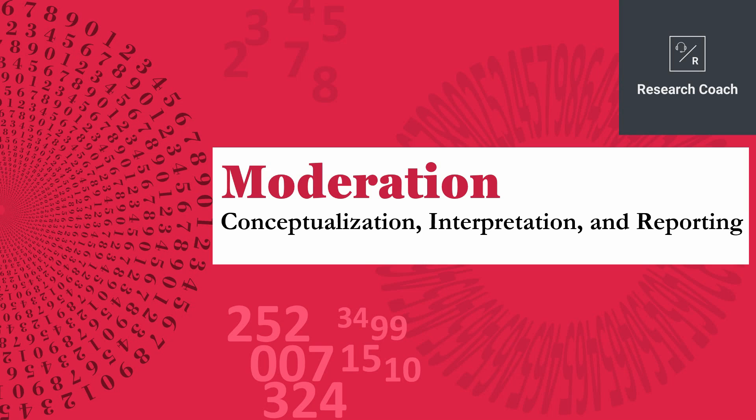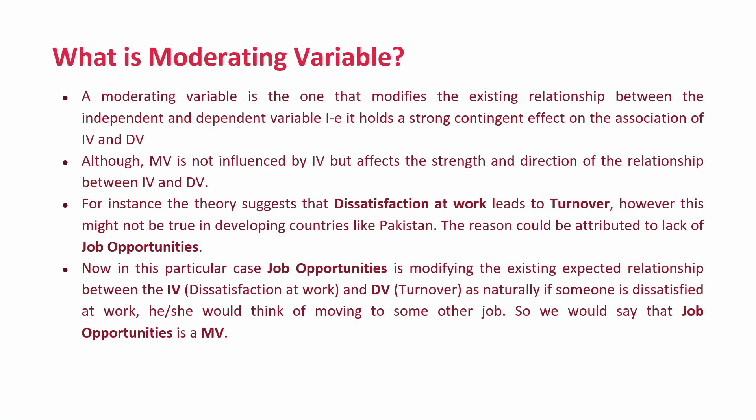Welcome. In this video we are going to look into moderation: what is moderation, how to run moderation, how to interpret and how to report. Starting with what is a moderating variable — a moderating variable is one that modifies the existing relationship between the independent and dependent variable, holding a contingent effect on the association of the IV and DV. Although the moderating variable (MV) is not influenced by the IV, it affects the strength and direction of the relationship between independent and dependent variable.